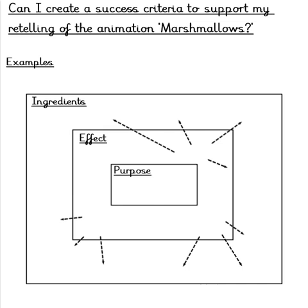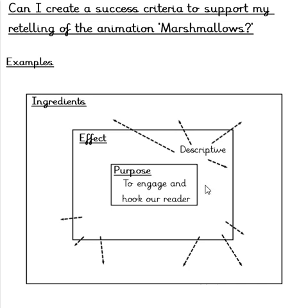Now it's time to create our success criteria. For this task, I will talk you through each step, providing examples as I go. This will help you with creating your own success criteria. First of all, in the innermost part of our success criteria, we have our purpose — why we are writing our story and who it is for. Our purpose is to engage and hook our reader. The next box contains the effects — how we are going to achieve this to engage the reader: for example, by being descriptive, by creating suspense, and by telling what happened clearly.